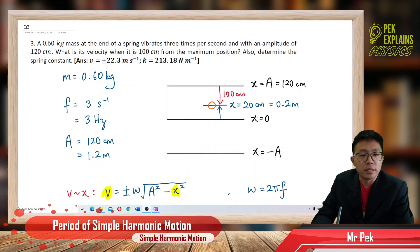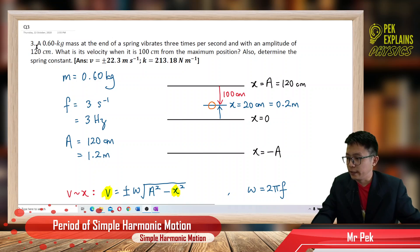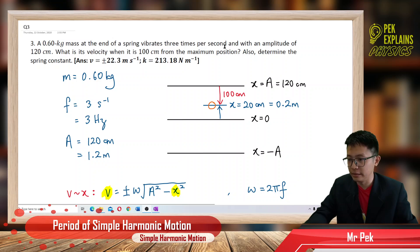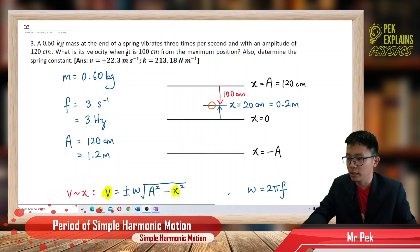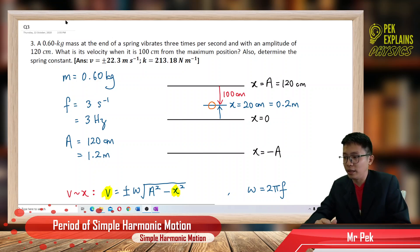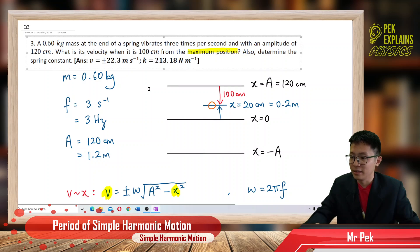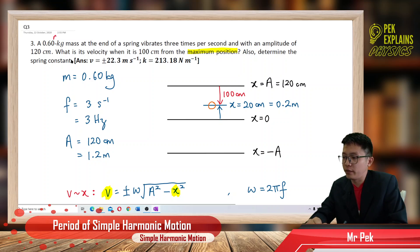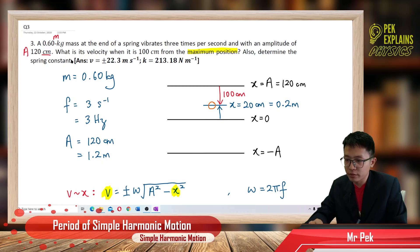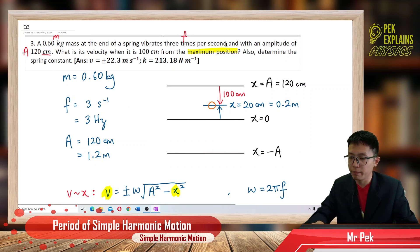Welcome to the third question on period of simple harmonic motion. A 0.6 kilogram mass at the end of a spring vibrates 3 times per second with an amplitude of 120 cm. What is its velocity when it is 100 cm from the maximum position? Also determine the spring constant. So we have the mass, the amplitude in cm, and the frequency — 3 times per second is 3 hertz.